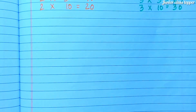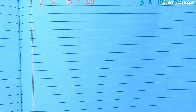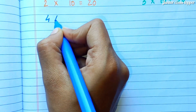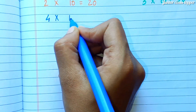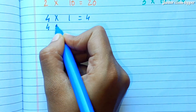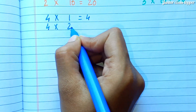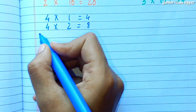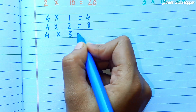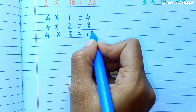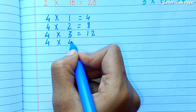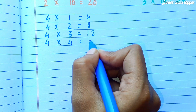Table of 4. 4 1s are 4. 4 2s are 8. 4 3s are 12. 4 4s are 16.